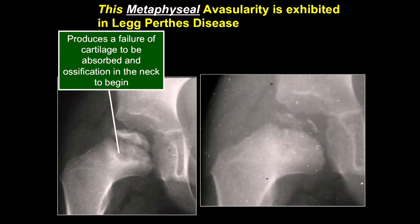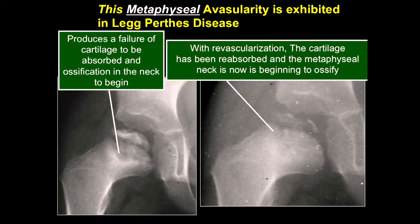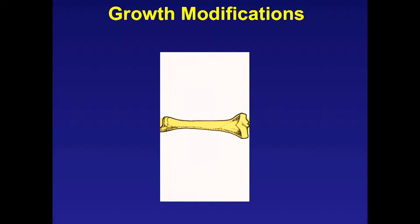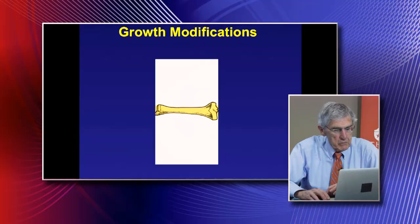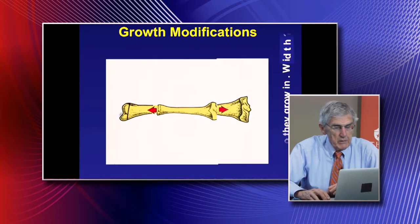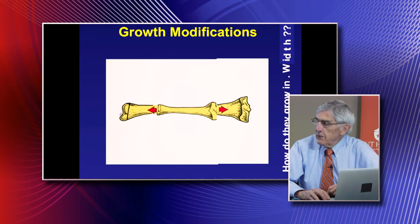In Legg-Perthes disease, you have radiolucent defects which are really nothing more than tons of cartilage that haven't been reabsorbed. One of the best ways to tell that you're getting new blood supply is that those dead cartilage cells are disappearing and new bone formation is occurring—it's beginning to ossify.